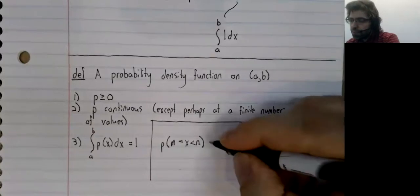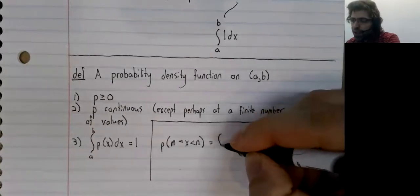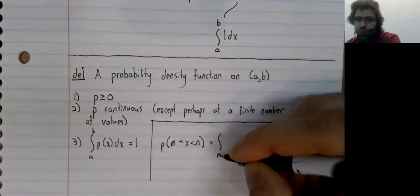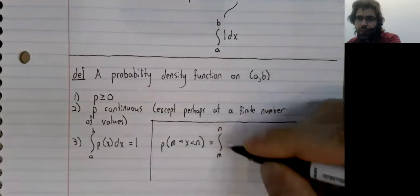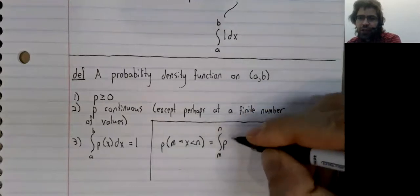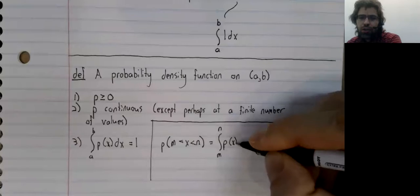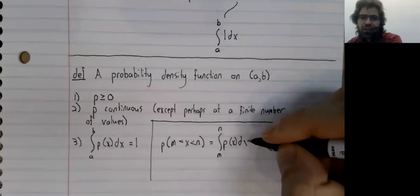well, it's the integral from M to N of the probability density function.